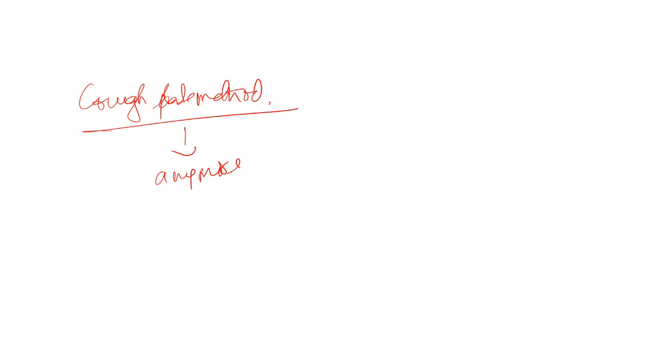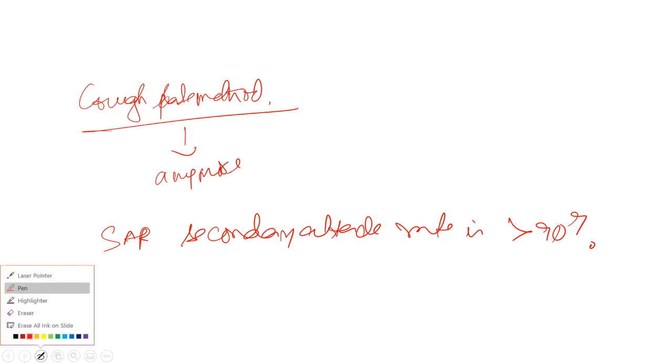Because why? The secondary attack rate is greater than 90%. Now let's go to the stages of Bordetella Pertussis.